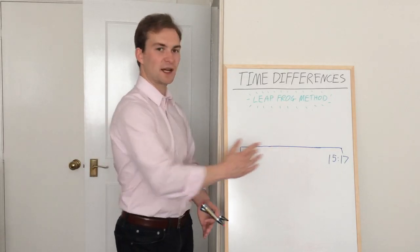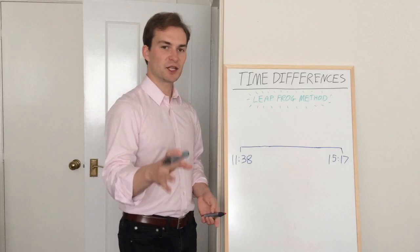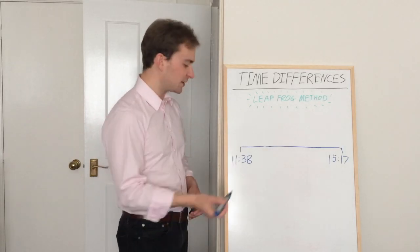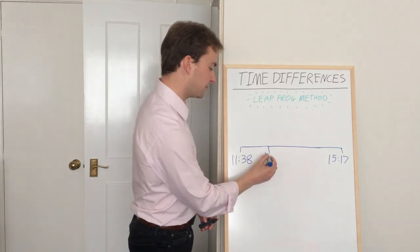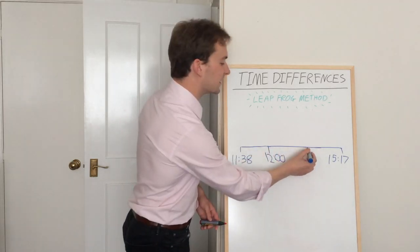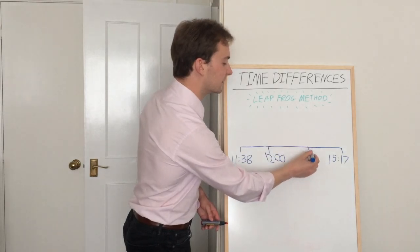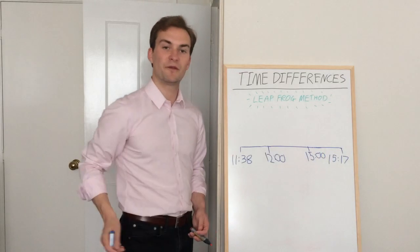So what I'm going to do with this timeline I have here is break it down slightly. I'm going to put in two extra times. The first time is going to be the first hour up from 1138, so that will be 1200 hours, and then over here I'm going to put in 1500 hours, so the hour before.